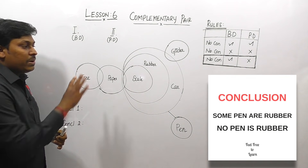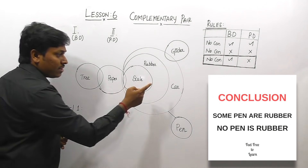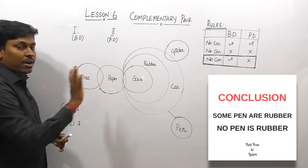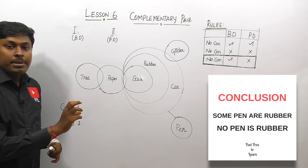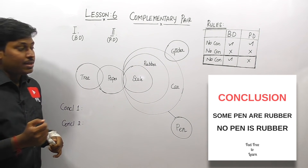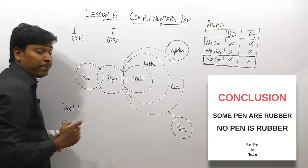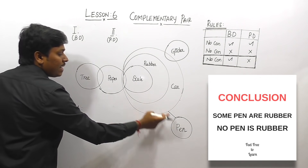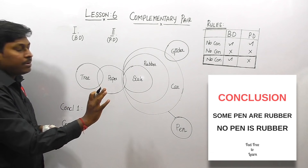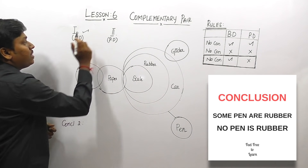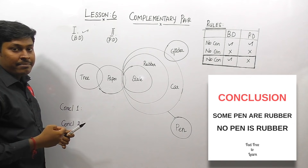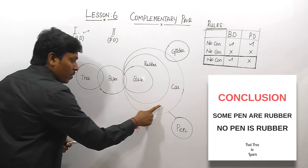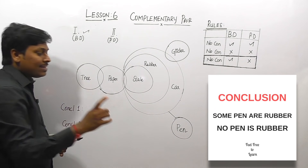Question number four: conclusion one is 'Some pen are rubber' and conclusion two is 'No pen is rubber'. It looks like a complementary pair, so our target is to check only the 'No' conclusion. In the basic diagram there is no connection between pen and rubber, so the conclusion is true. When we move to the possible diagram, the statement clearly says there is no connection between car and pen.